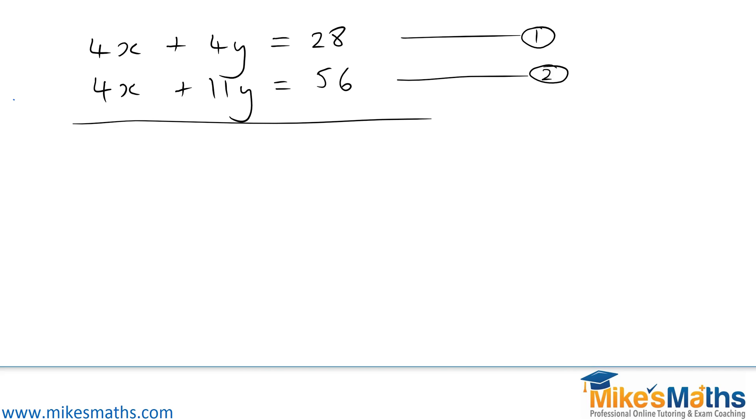Well, when we look at our two equations, we should spot very quickly that we've got 4x here and 4x here. And that's good news. We want the same number of x's or the same number of y's so that we can get rid of them. Here we've got the same number of x's. So we can do 4x take away 4x. Well, that means we're going to do one of these equations take away the other equation. Which one do we want to do? Would we rather do 11y take away 4y? Or would we rather do 4y take away 11y? I hope you'd agree with me that 11y take away 4y is more sensible. So, in other words, we're going to do equation 2 take away equation 1.